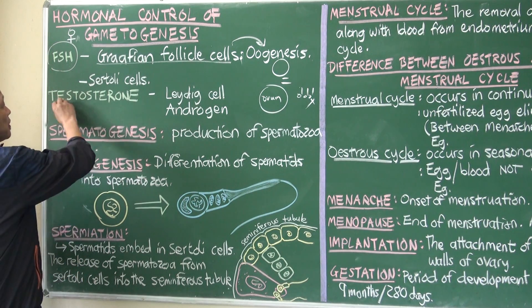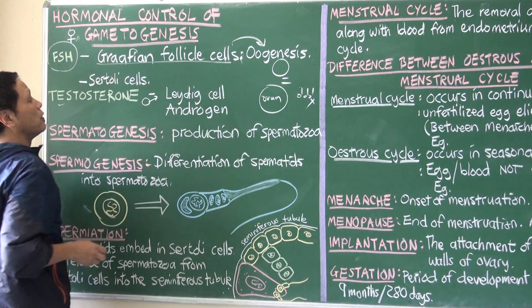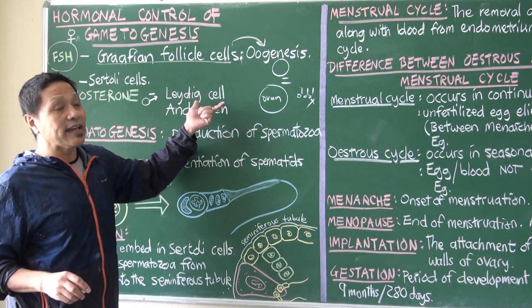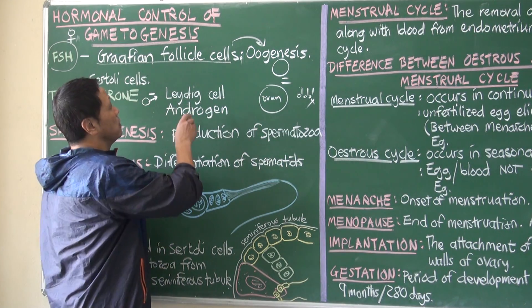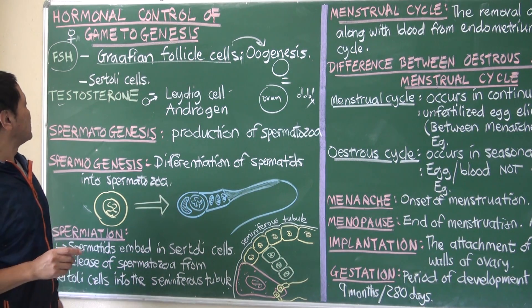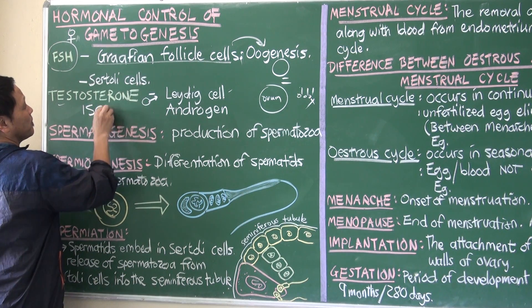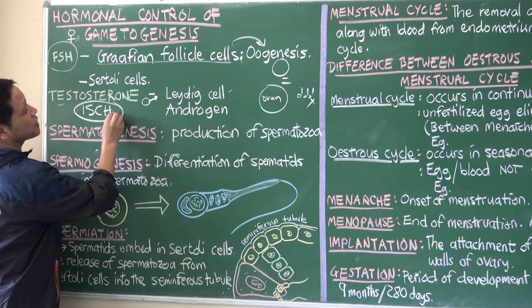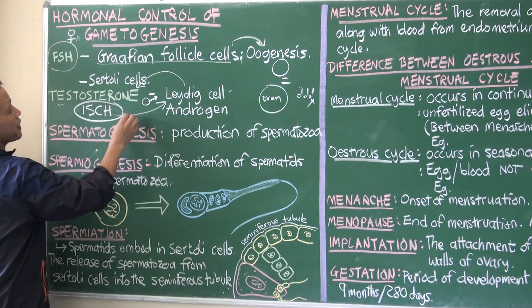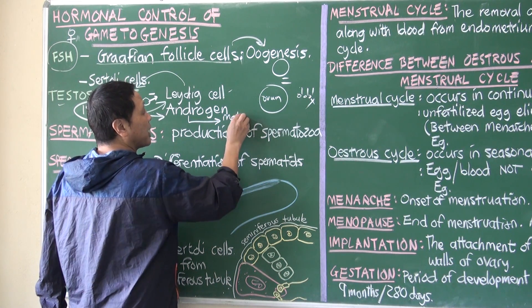Then we have testosterone, which is called the male hormone. It activates the Leydig cells to secrete testosterone. Testosterone is an androgen, meaning it is a male hormone and it produces male characteristics.